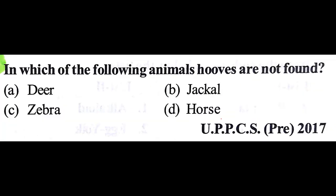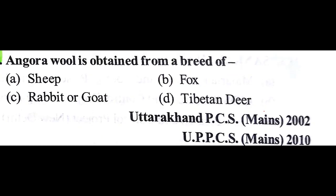In which of the following animals are hooves not present? Deer has hooves, zebra has hooves, horse has hooves, but jackal has nails, so our answer is B: jackal. Angora wool is obtained from a breed of rabbit or goat, so our answer is C.